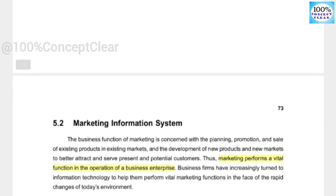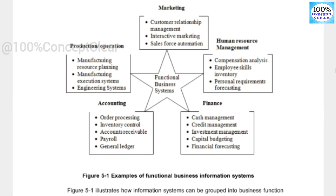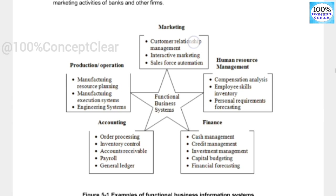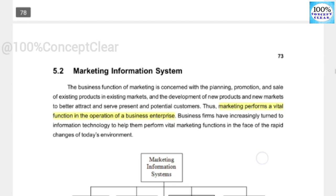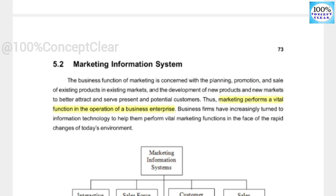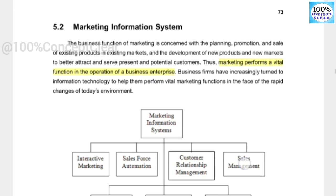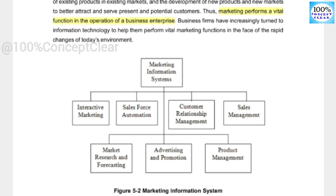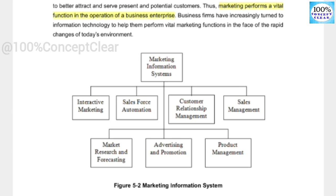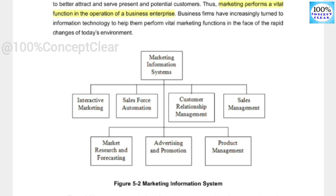The first one is the marketing information system. In the five functions, the first one is marketing information system. Marketing performs a vital function in the operation of a business enterprise — we all know marketing is very important. The marketing activities include interactive marketing, sales force automation, customer relationship management, sales management, market research and forecasting, advertising and promotion, and product management.